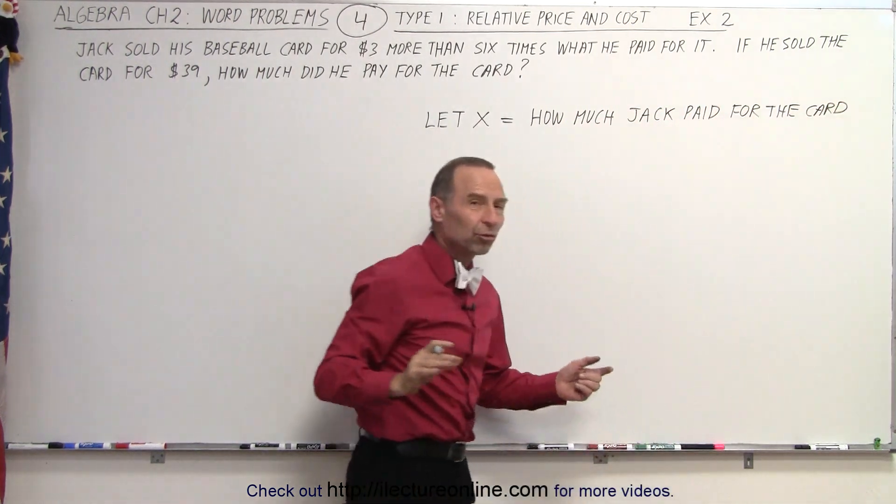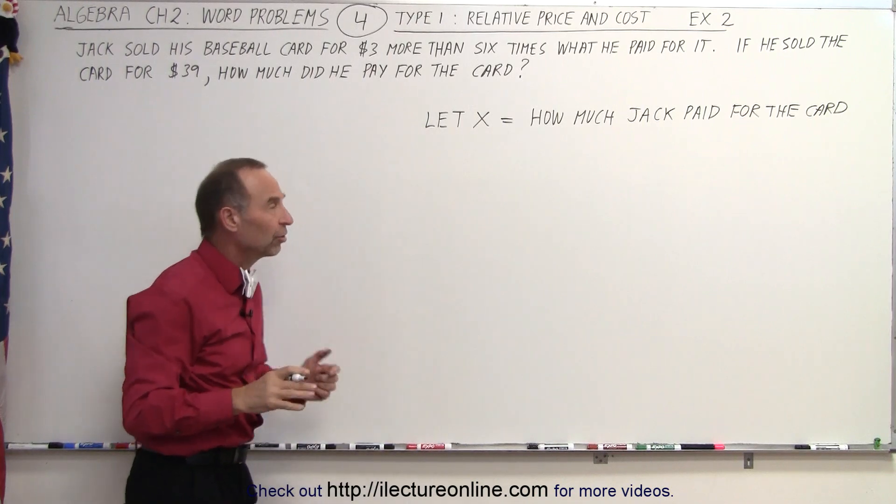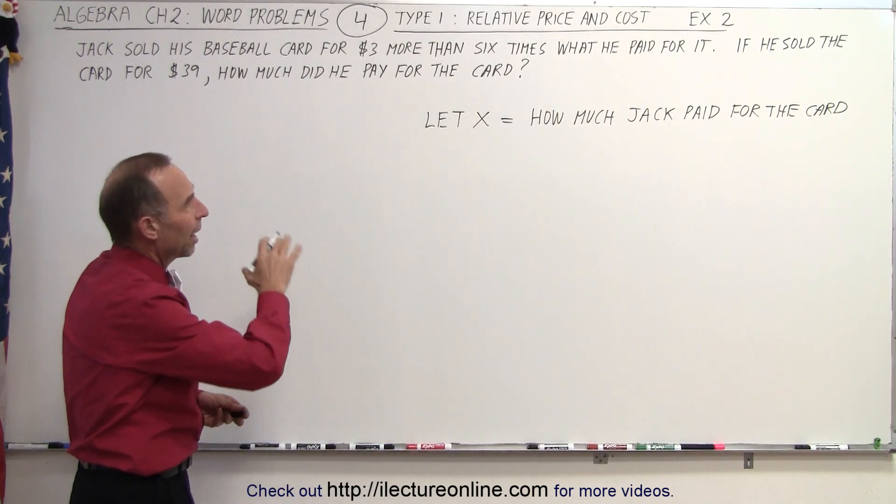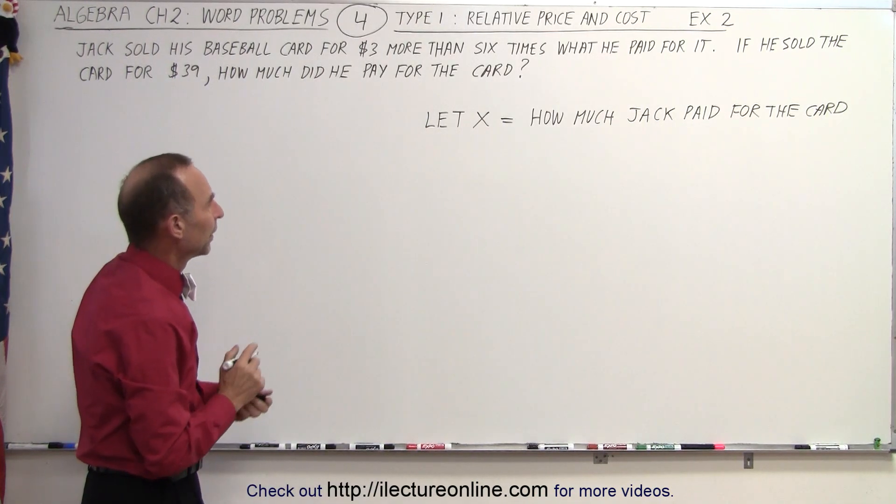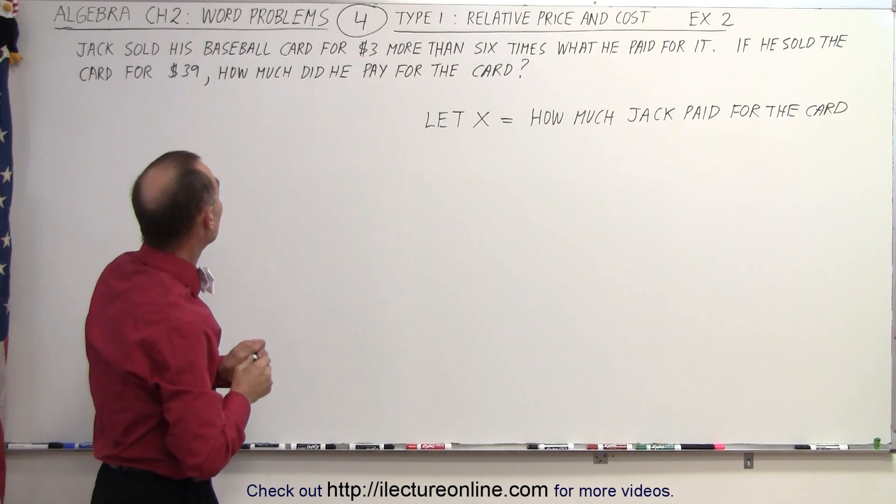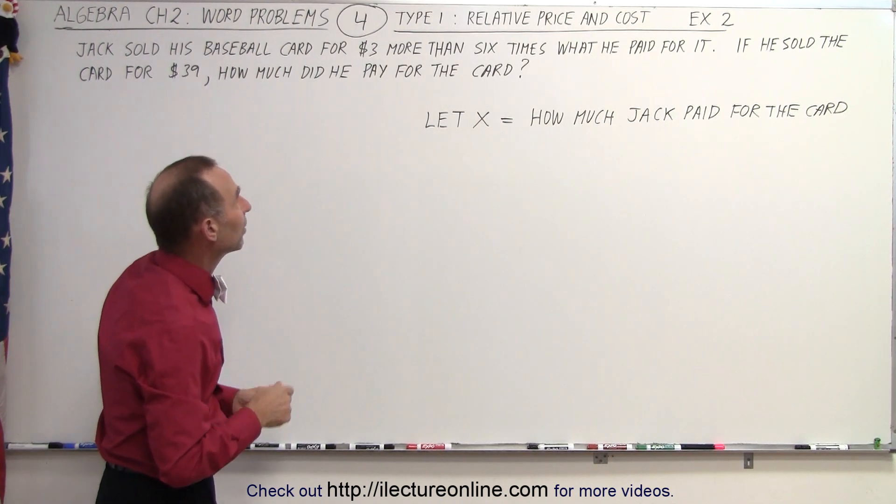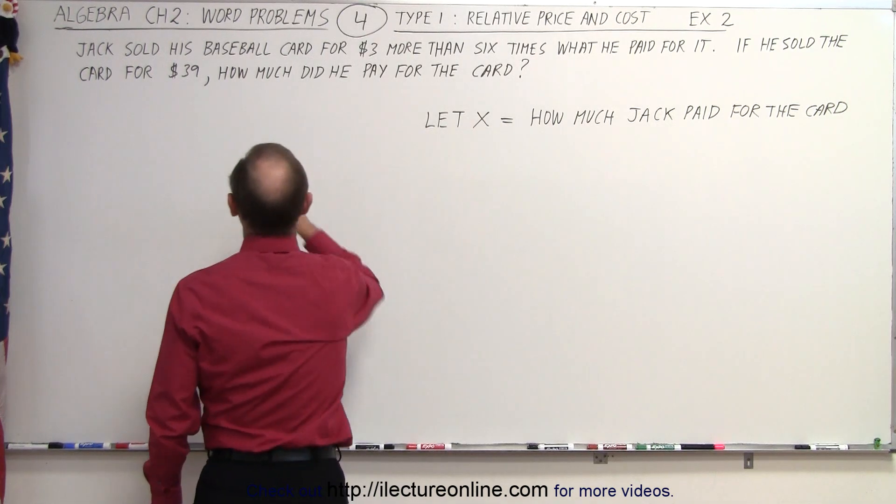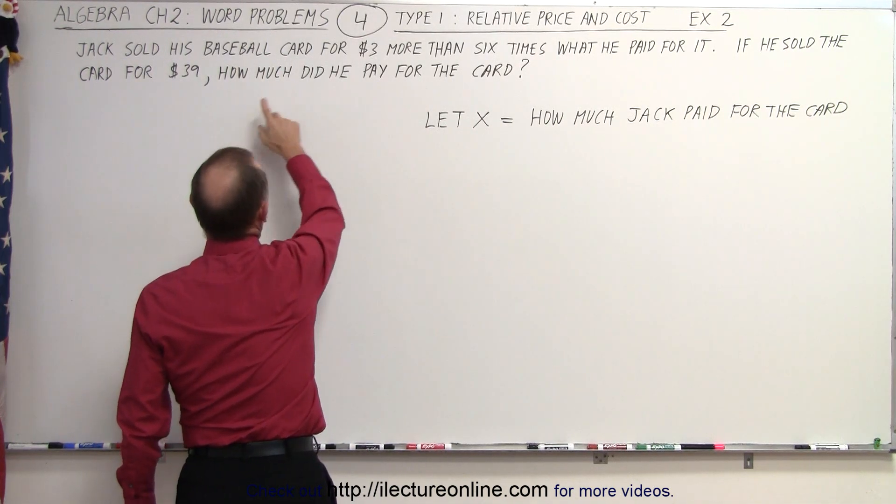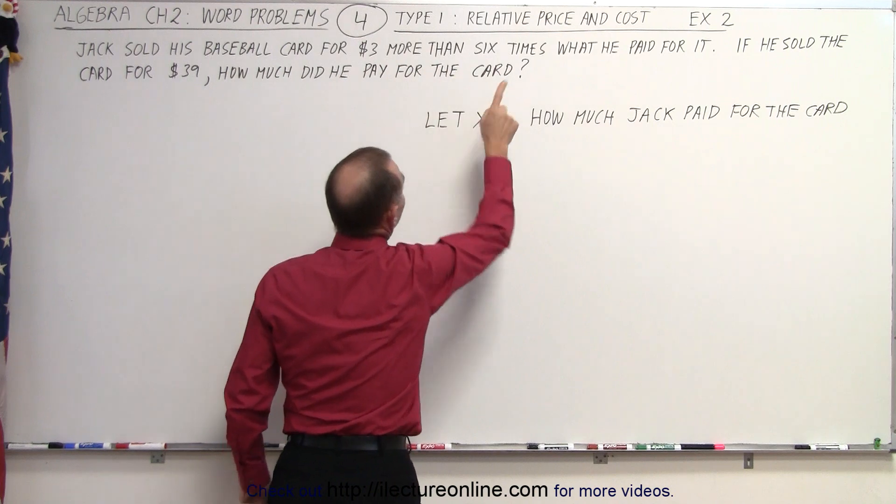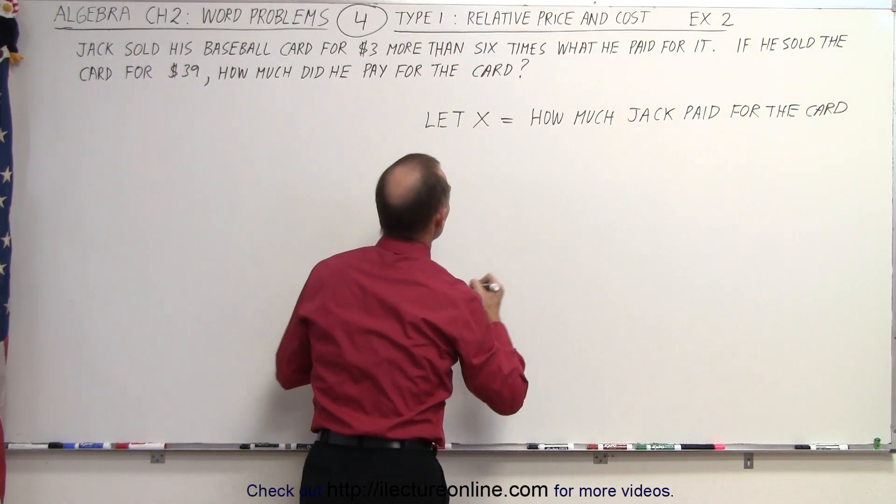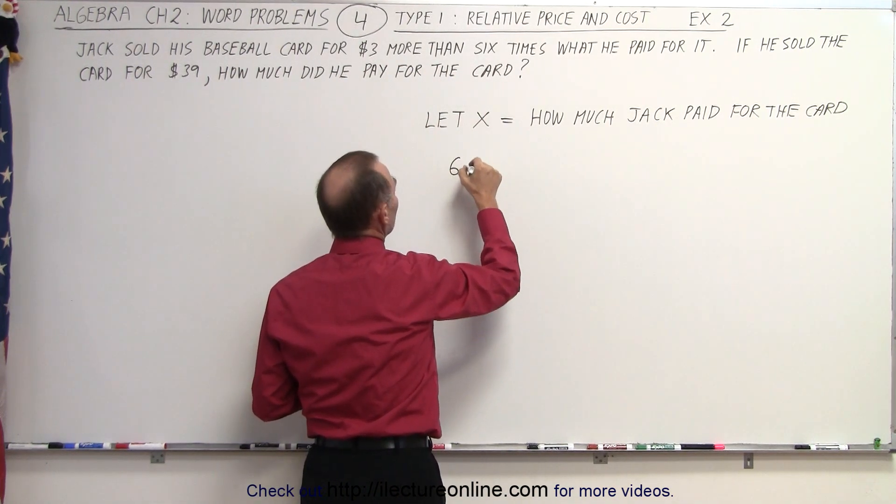Notice the description. We're not shortchanging the description at all—we write out how much Jack paid for the card. Now we have a relationship between how much he sold it for and what he paid for it. It says that what he sold the card for is $3 more than six times what he paid for it.